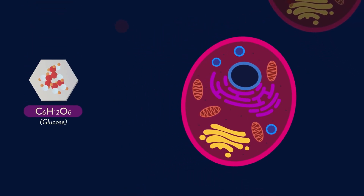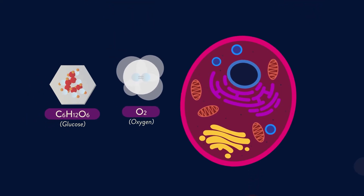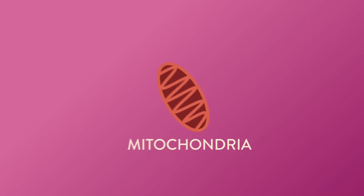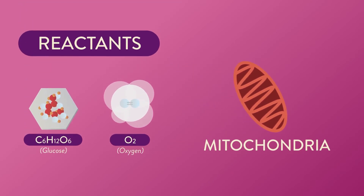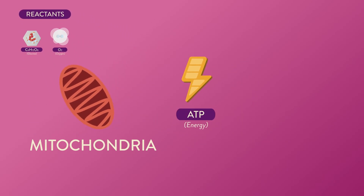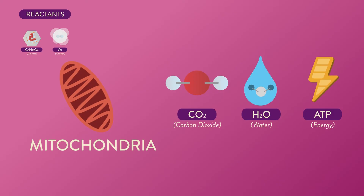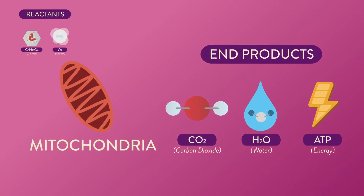The cell takes in the raw materials: glucose, the sugar from eaten food, and oxygen. In this direction, we begin with an organic compound, sugar, along with inorganic oxygen as our reactants. The mitochondria processes these raw materials and produces the end products: ATP, biochemical energy; water, either used by the body or excreted; and carbon dioxide, which is exhaled as waste from the body.